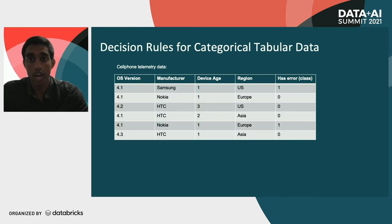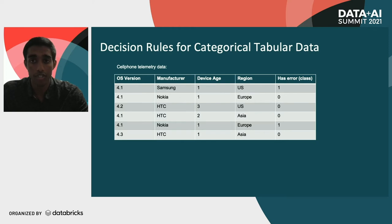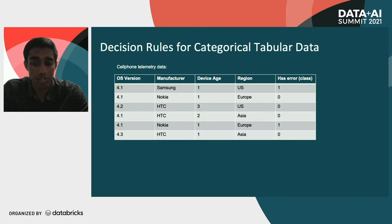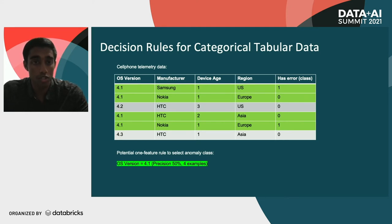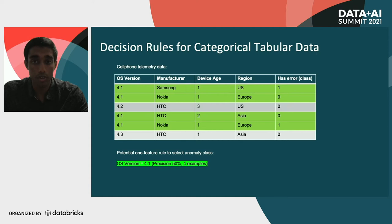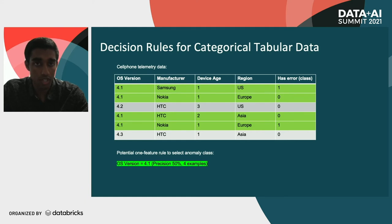Your class variable — whether or not you have an anomaly — is essentially the 'has error' column: was there an error during the phone's operation recently? In this dataset we've got two anomalies and four non-anomalies. One potential single-feature decision rule is 'operating system version equals 4.1', which retrieves four rows highlighted in green. Two of those are anomalies out of the four, giving us a precision of 50% and four total examples returned.